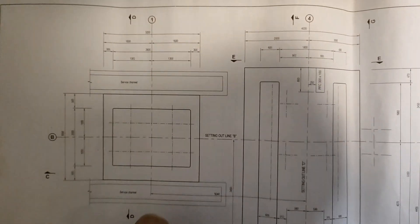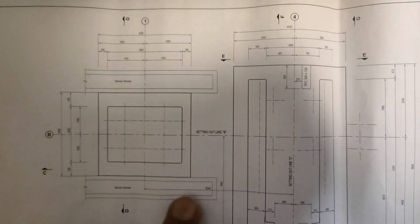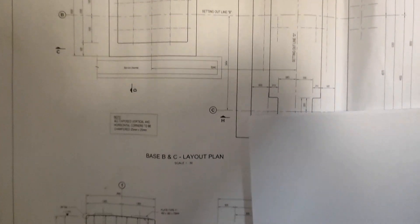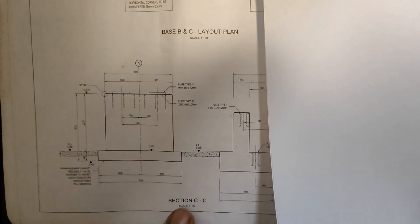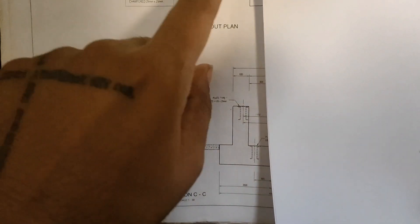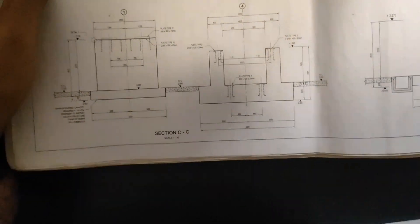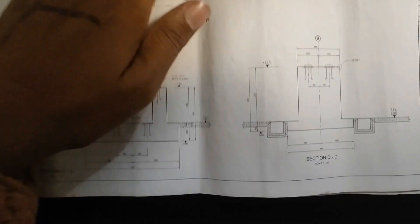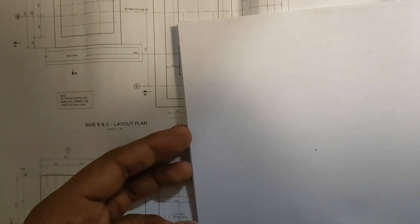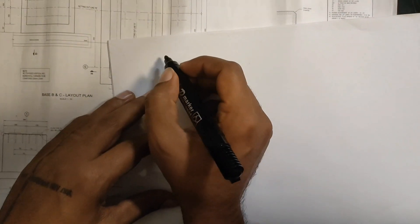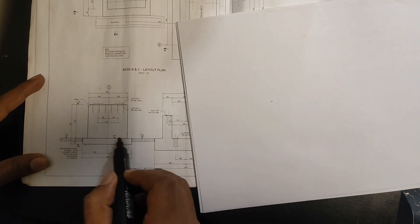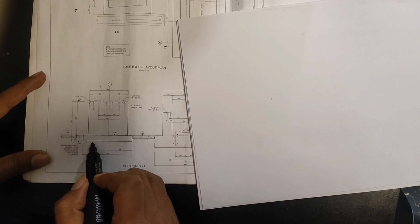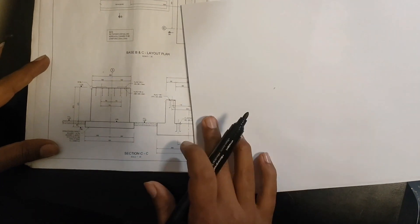This is the layout plan for this machine footing. Here is the section — Section CC of this footing. And here is Section DD, which is for the other footing. Let me draw this on a sheet so it's easier to understand. The footing will be in two parts: below the NGL/FFL level and above the FFL level.